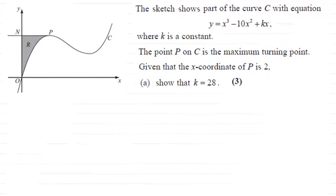Hi there. Now for this question we're told that this sketch shows part of the curve C with equation y equals x cubed minus 10x squared plus kx, where k is a constant and the point P on C is the maximum turning point. Given that the x coordinate of P is 2, show that k equals 28 for three marks.